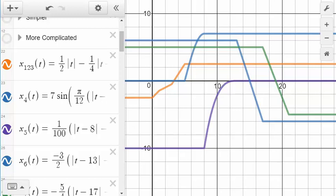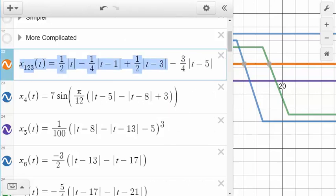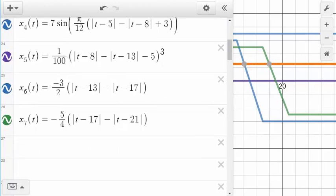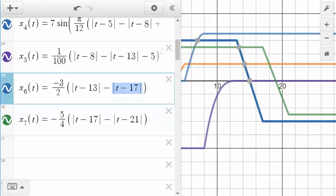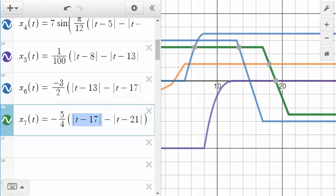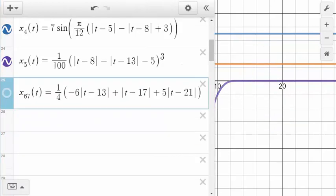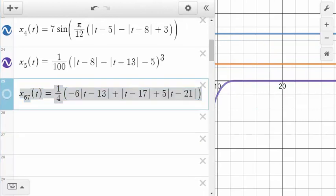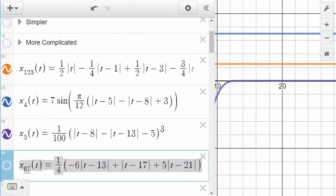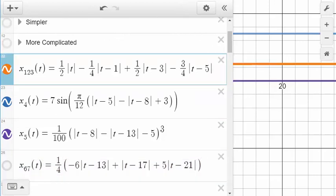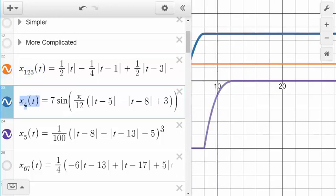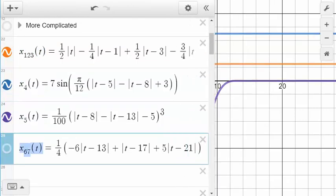Furthermore, remember how we combined the x1, x2, and x3 functions? We had some like terms that combined. I'd like to do the same thing with x6 and x7. I see a like term in there. I see an absolute value of t minus 17 in both of those equations. So let's combine x6 and x7 and together we'll call it x67. Okay, there it is combined and simplified.